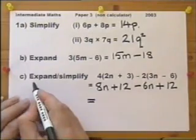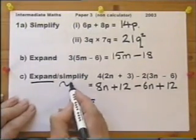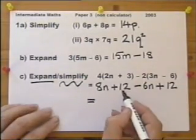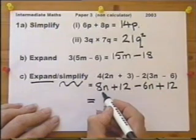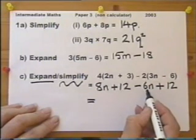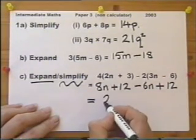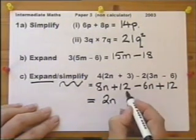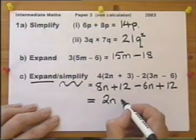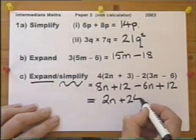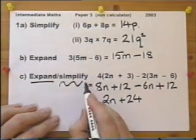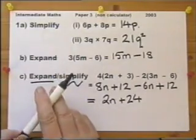Now that's the expand part of the question. Now the simplify part means look at the 8n with the 6n: 8n minus 6n is 2n, plus 12 plus another 12 is plus 24. This is the simplify by putting the terms together.